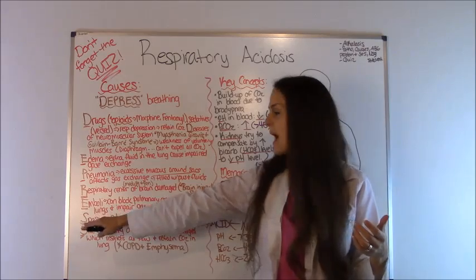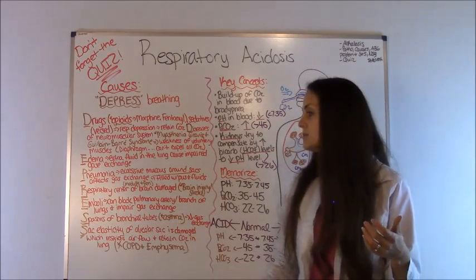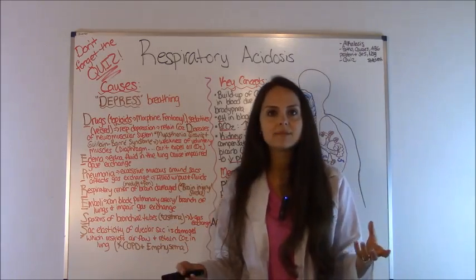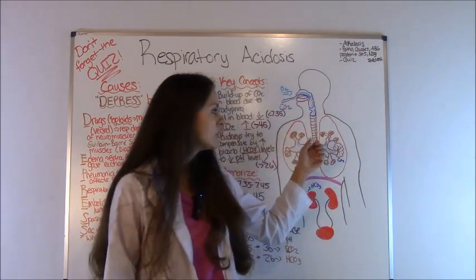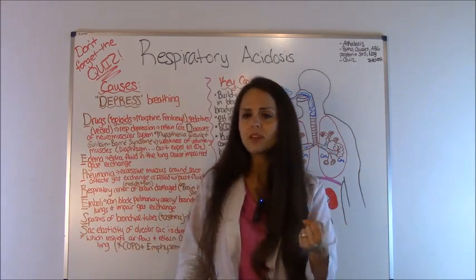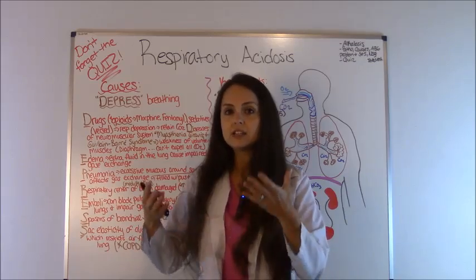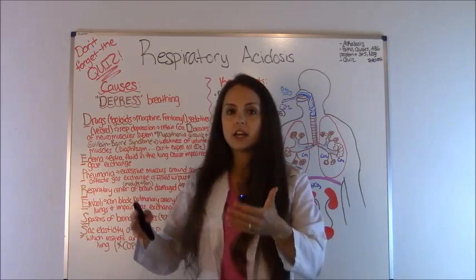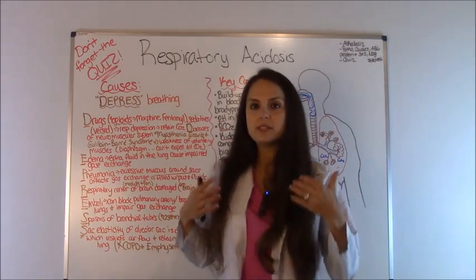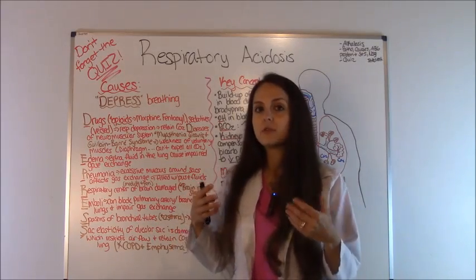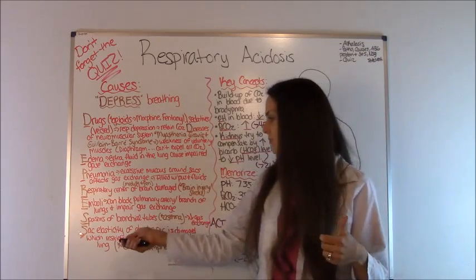S - Spasms of the bronchial tubes. This is asthma. Whenever a patient has an asthma attack, these bronchial tubes start spasming, which is blocking, just like the emboli, the gas exchange. That patient, whenever they're having that, they're not taking those nice deep breaths and they're building up that CO2.